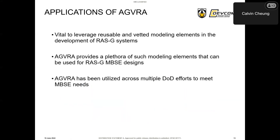That is a summary of all the models within AGVRA. To fully realize the benefits of MBSE, it is vital to leverage reusable modeling elements in the development of autonomous systems. The libraries, profiles, and model content that AGVRA provides can be leveraged to facilitate robotic and autonomous system MBSE design. AGVRA has been utilized across multiple DoD efforts to meet MBSE needs, enabling higher quality outcomes at lower costs with adherence to MOSA principles.